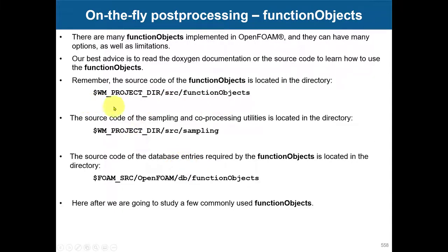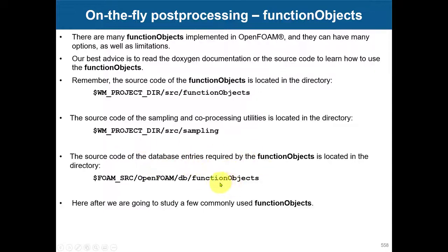I invite you to take your time and visit the source code to see what function objects are available. If you are interested in sampling, we're going to do some sampling as well. Sampling is done after you have the solution, while function objects run online while running. I encourage you to go and read the documentation. In the header file, you have the description, or you can use the foamInfo tool. There is also an interesting directory with a database of required entries for the functionality.